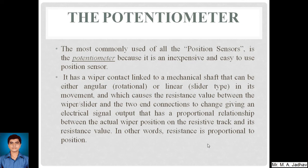The first type is the potentiometer. It is the most commonly used of all position sensors because of its easy-to-use nature and because it is inexpensive, making it economical as well. It has a wiper contact linked to a mechanical shaft that can move either angularly — that is, rotationally — or linearly, as a slider type. This movement causes the resistance value between the wiper and the two end connections to change, giving an electrical signal output.